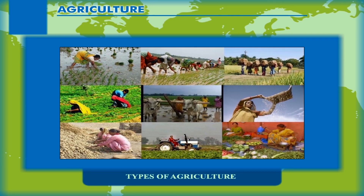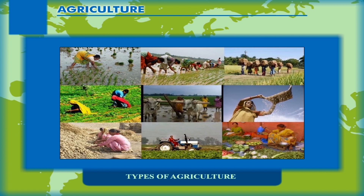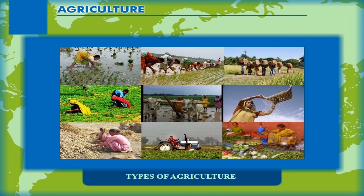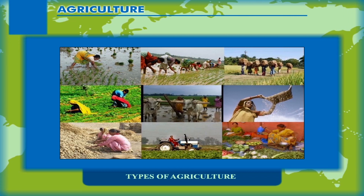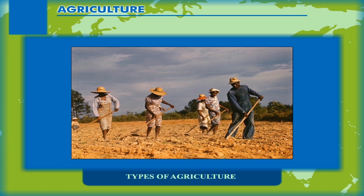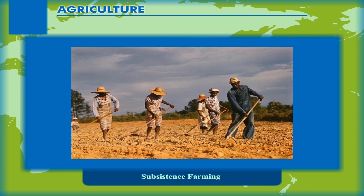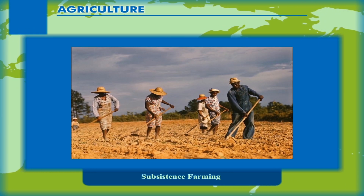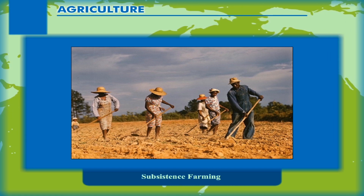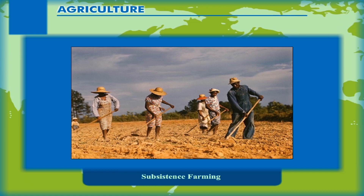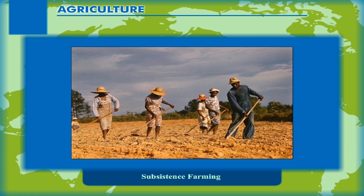Types of Agriculture: Based on agricultural practices, crops grown, the types of livestock kept, and the proportion of output retained by the farmer, agriculture may be broadly divided into two categories: 1. Subsistence agriculture and 2. Commercial agriculture. Subsistence farming is practiced mainly to meet the requirements of the local community, and most products are grown and consumed within the area where they are produced. It includes mainly four types of agricultural practices: A. Nomadic herding, B. Shifting farming, C. Intensive farming, D. Extensive farming.